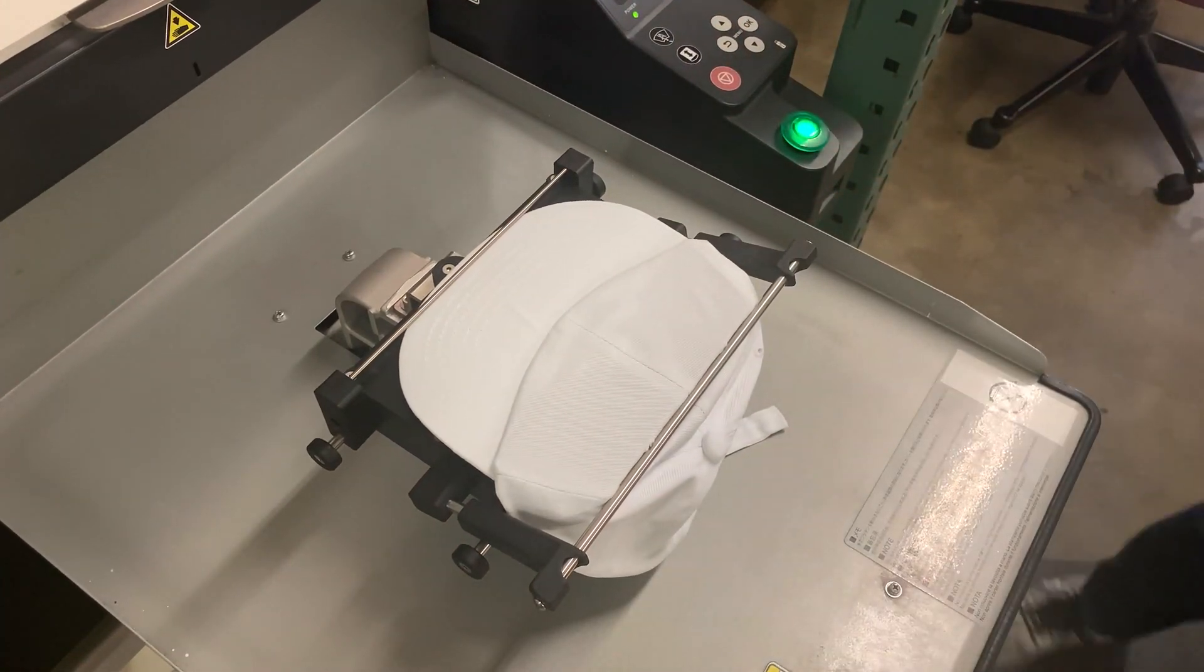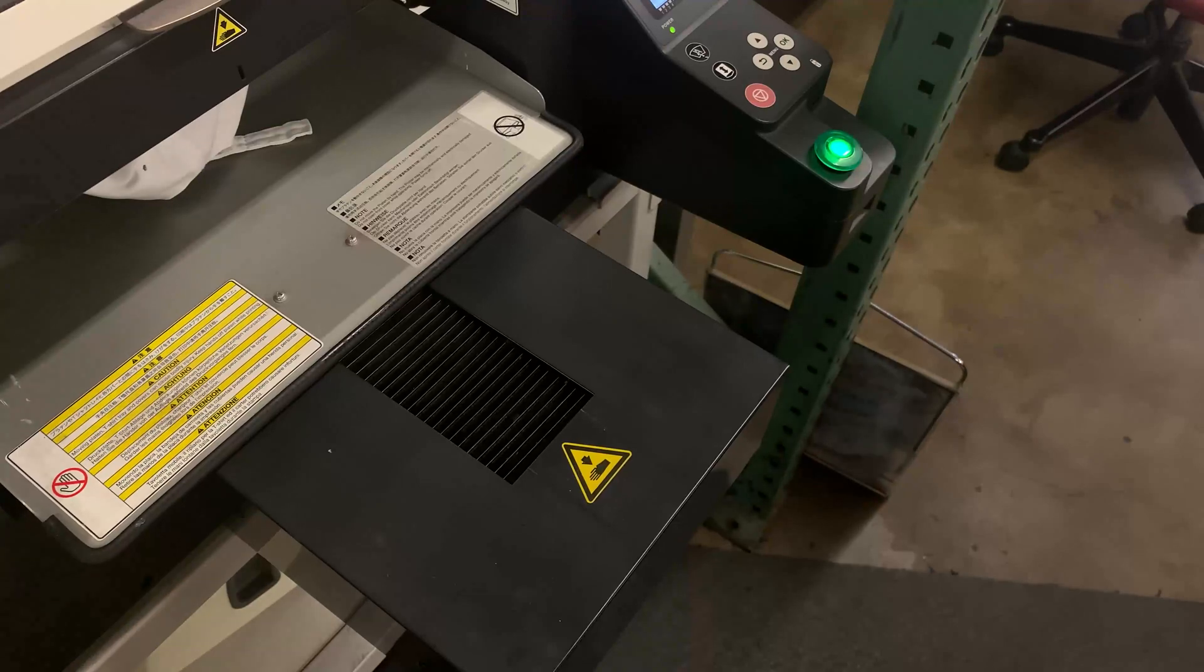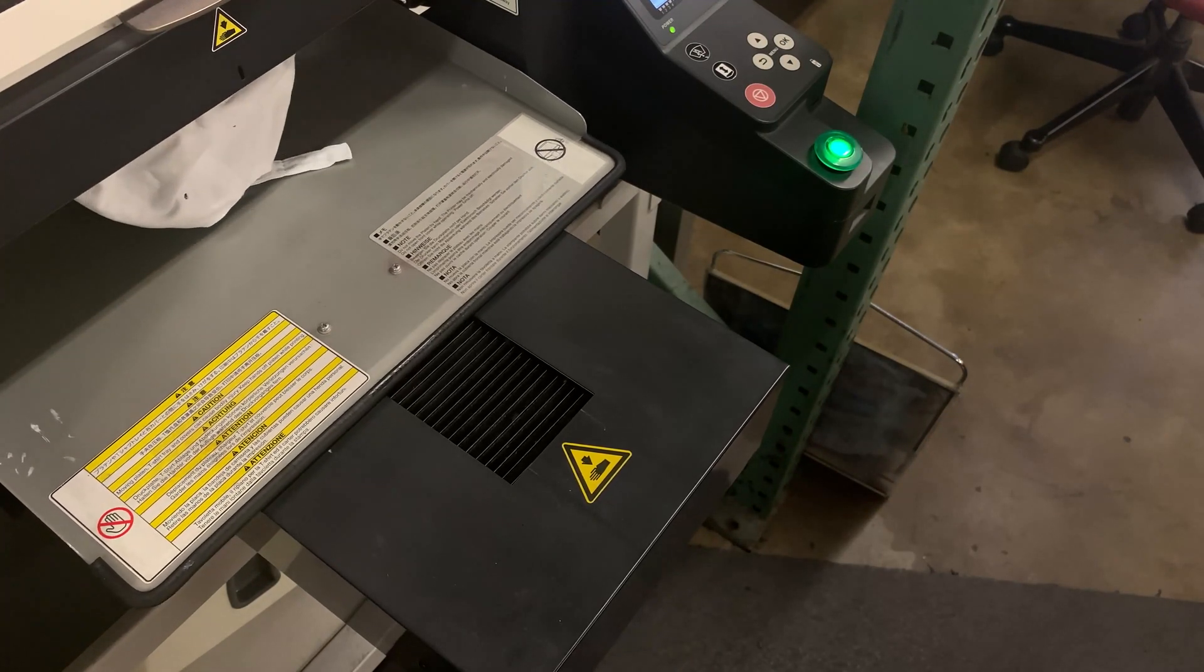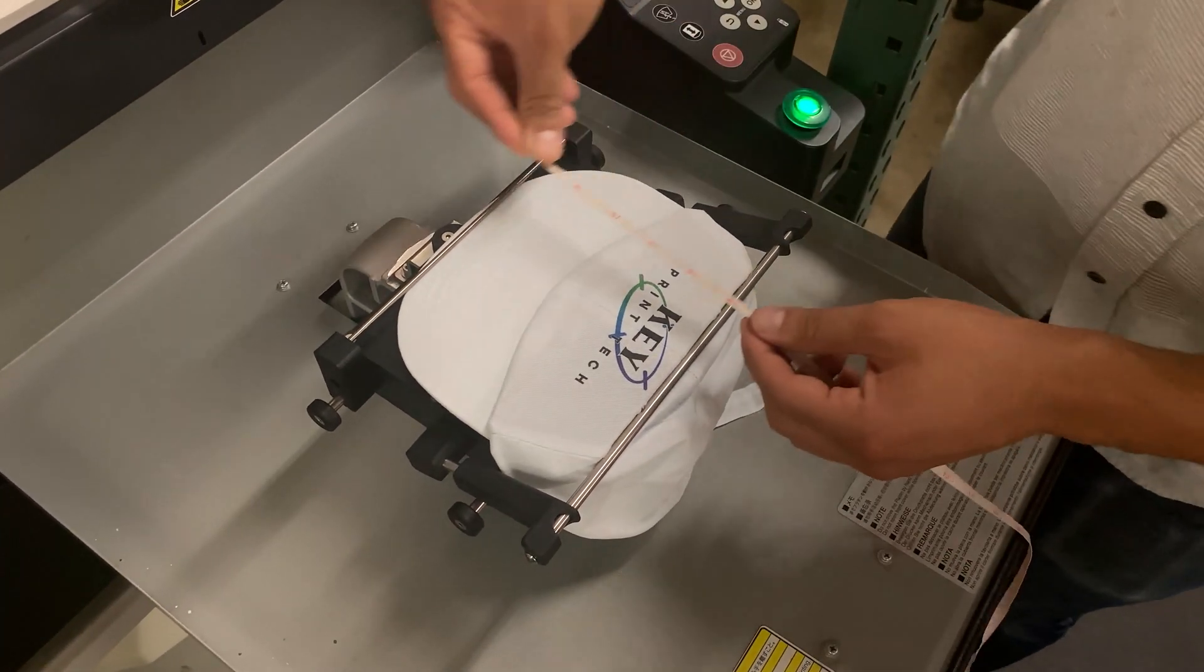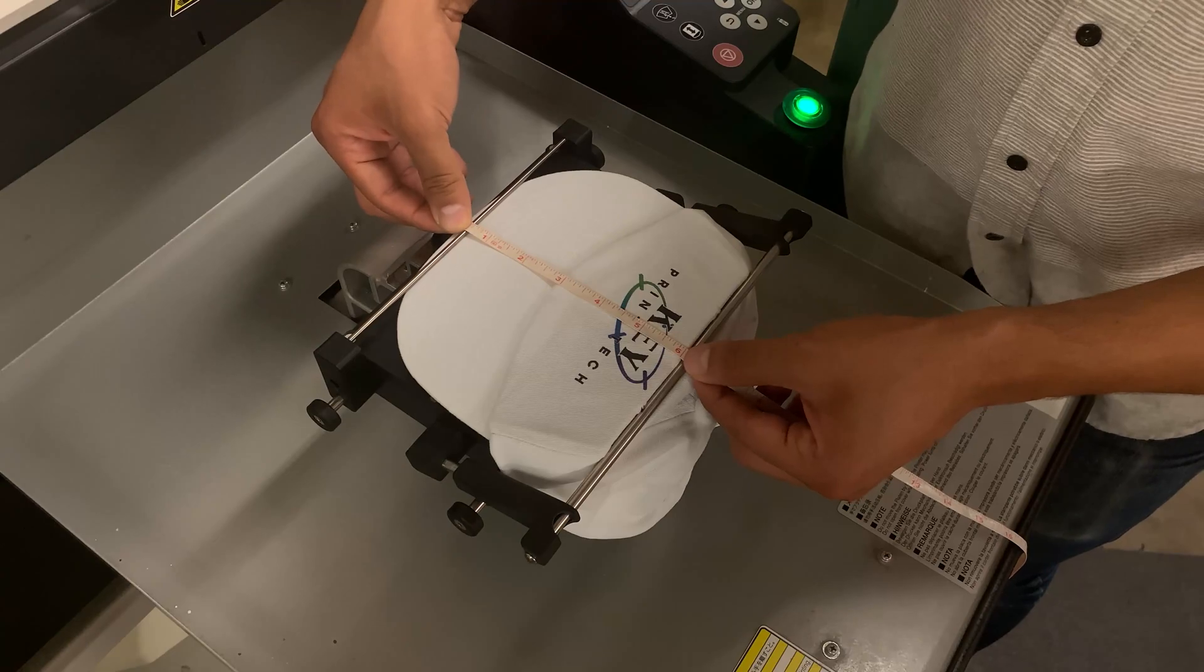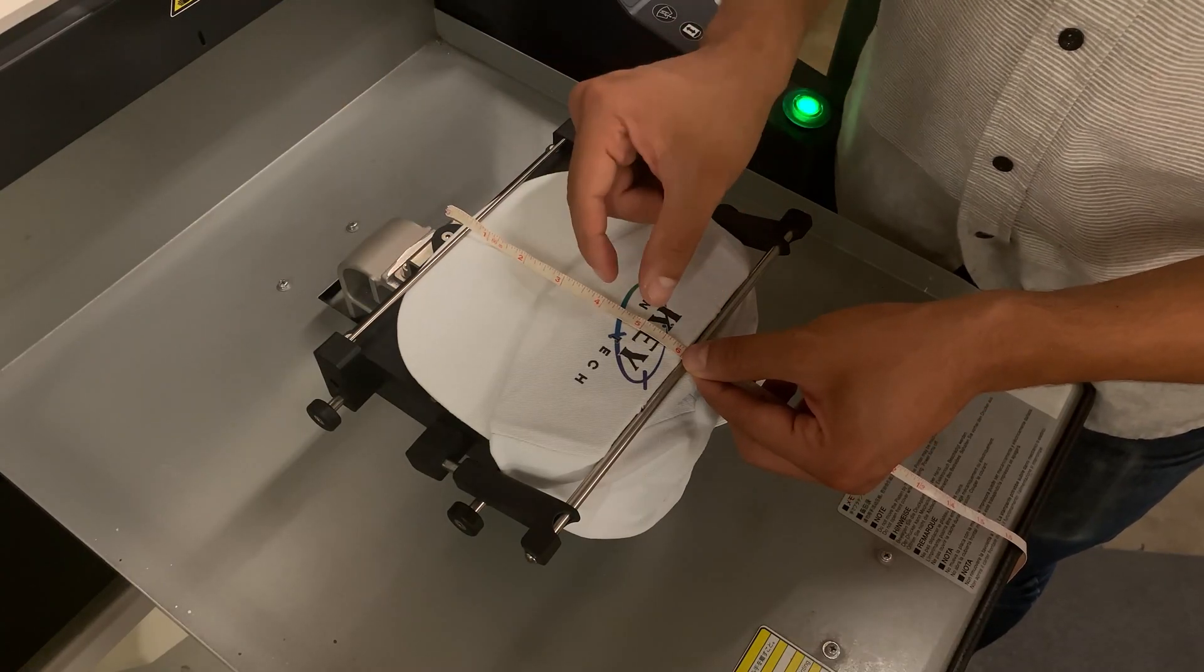And there you go, it's exactly where we told it to print. Between four to six inches, two inch height, corresponding width, down the center of the hat. It's very easy when you know there's a one-to-one aspect ratio.